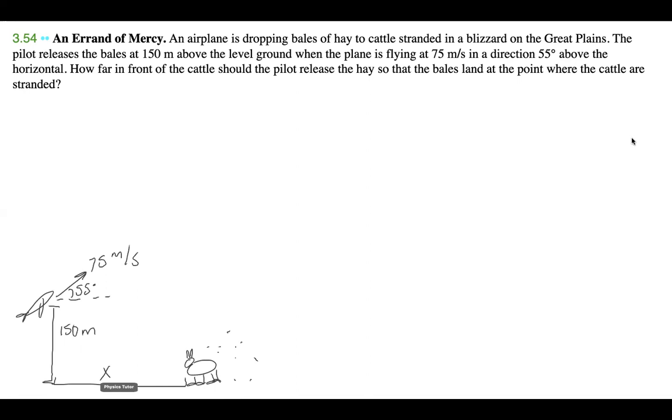We need to know how far in front of the cattle should the pilot release the hay so that the bales land at the point where the cattle are stranded. If we let something go from the plane flying at 55 degrees above the horizontal at 75 meters per second, it's going to have some X component and some Y component. Due to gravity, acceleration due to gravity is how long it's going to take this item to fall all the way to the ground. We have gravity influencing it, but for the X direction, it's just going to be a constant X component of 75 meters per second. Let's write down all our unknowns and knowns.